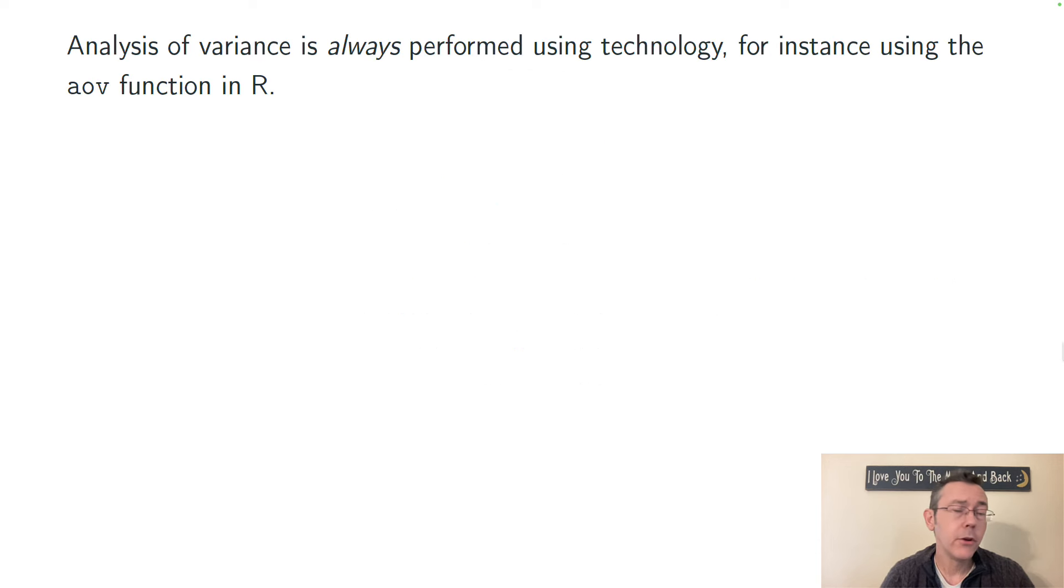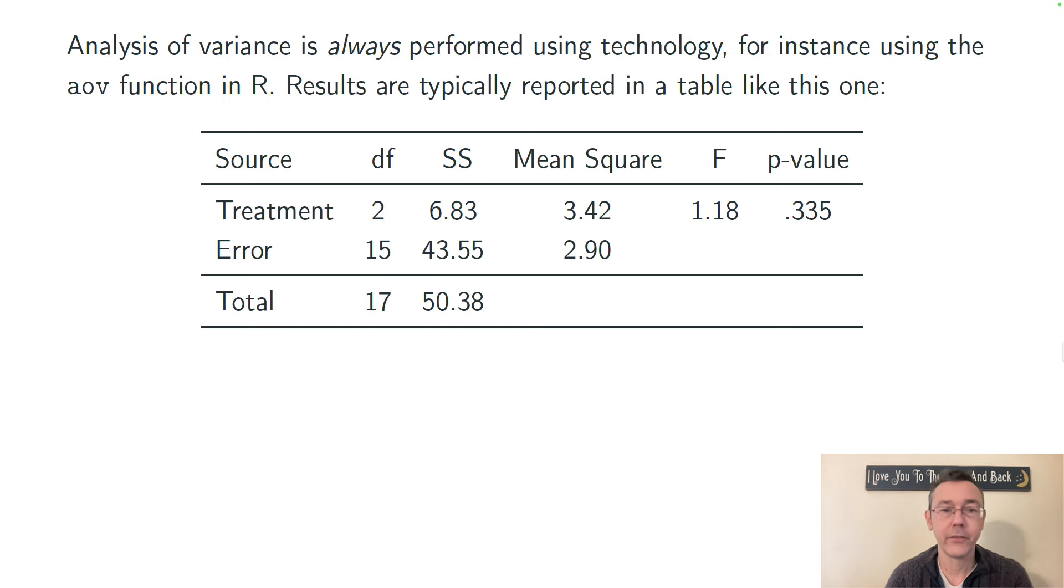Now, ANOVA is always performed using technology these days. You almost certainly will not have to deal with the math unless you are in a specifically mathematically-oriented statistics class. I use R. That's one very typical way of doing it. In R, the command is AOV. And whether you're using R or any other sort of technology, the results will be given to you in an ANOVA table like this.